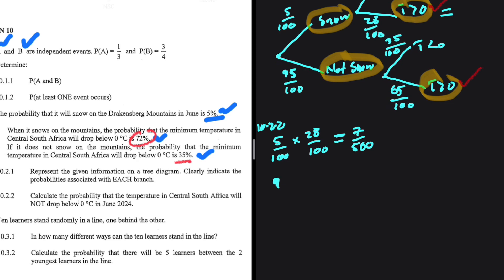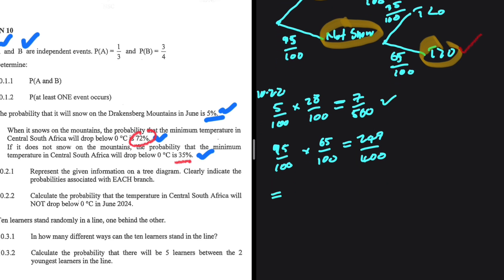On the other hand, if it does not snow, we have 95 divided by 100 multiplied by 65 divided by 100, which equals 247 divided by 400. When we go down the branches, we add. So the final answer is 7/500 plus 247/400, which equals 0.6315. That is the probability that the temperature will not drop below 0 degrees Celsius in June 2024.